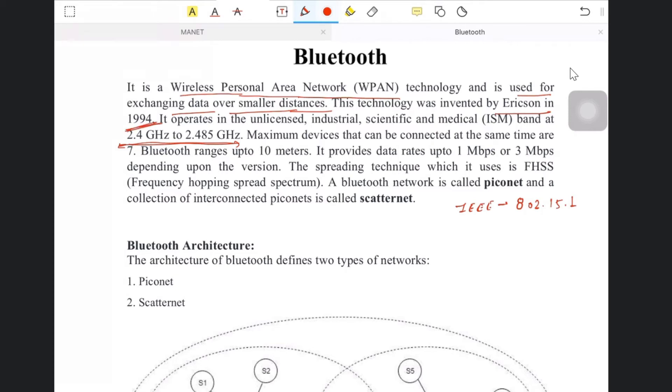Maximum devices that can be connected at the same time are seven. The range is up to 10 meters. It provides data rate up to 1 Mbps or 3 Mbps depending upon the version. Maximum speed is 1 to 3 Mbps. The spreading technique which it uses is FHSS.